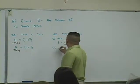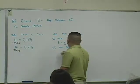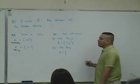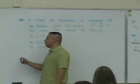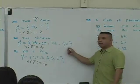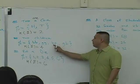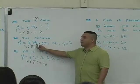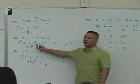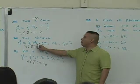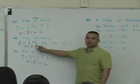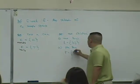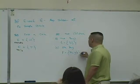What about this event? Having one boy? Which outcomes are associated with having one boy? GB? Is that one boy there? BG? Is that one boy? GG? That's no boys. BB. Is that one boy? No. That's two boys. So what are they? BG and GB. You guys okay with this?